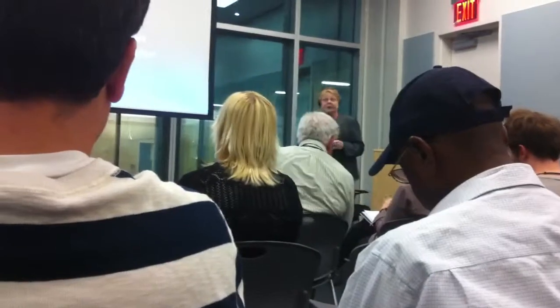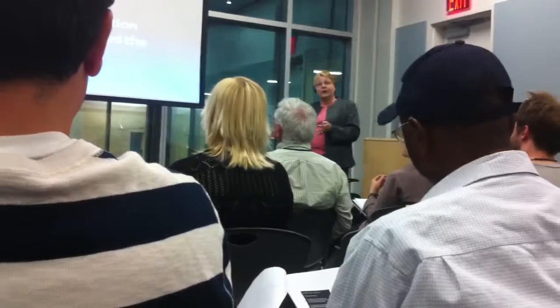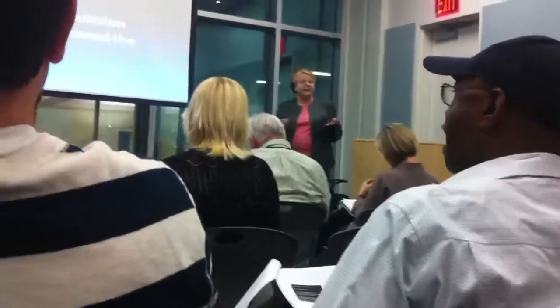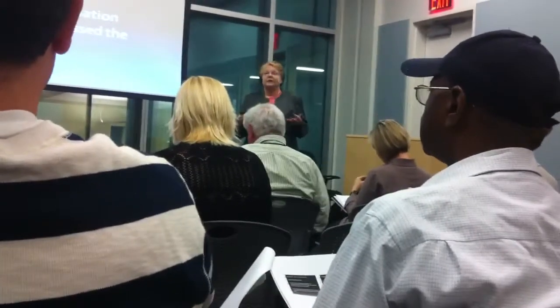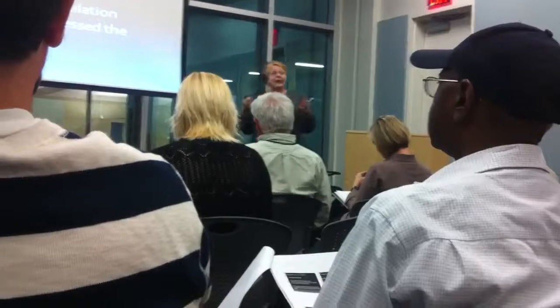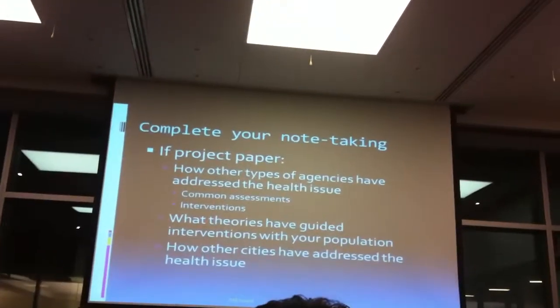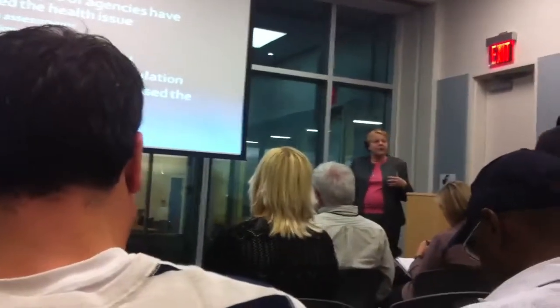If you're doing a project paper, you may be analyzing and writing your notes in a little different way. You may be looking at other agencies, comparing your project to what other agencies have done — how have they addressed the health issue, what types of assessment tools have they used, and are those tools tested? If it's an intervention, what types of interventions were used in those other agencies and how did they operate? What theories may have guided those interventions? Write it all down so that when you come up with the outline of your background, you'll have lots of information to draw on. In addition to looking at other agencies, you may be looking at other cities, how other cities have operated, or even more globally — how have other countries operated?